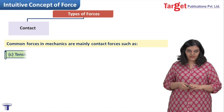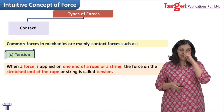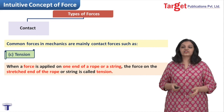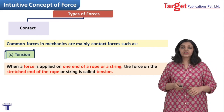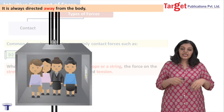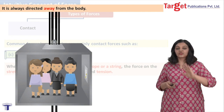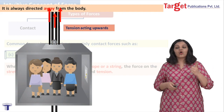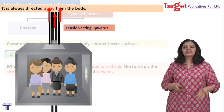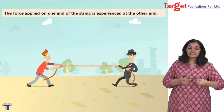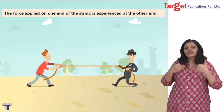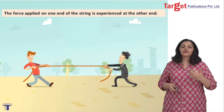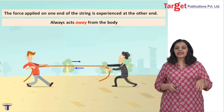The third type of force is the tension force. Tension force is exerted by a rope, string, or cable. When a force is applied on one end of a rope or string, the force on the stretched end is called tension. For example, elevator shafts are suspended using thick cables — these cables exert tension, which is the reason the elevator can rise or descend. Tension always acts away from the body. In tug of war, force applied on one end of the string is experienced at the other end, and it always acts away from the body.